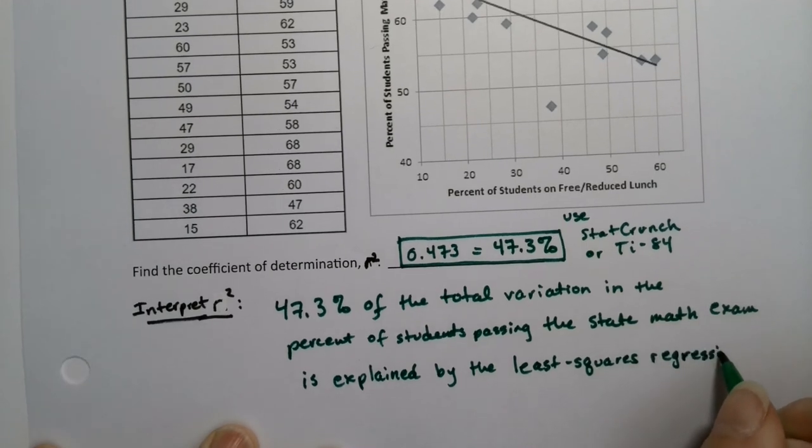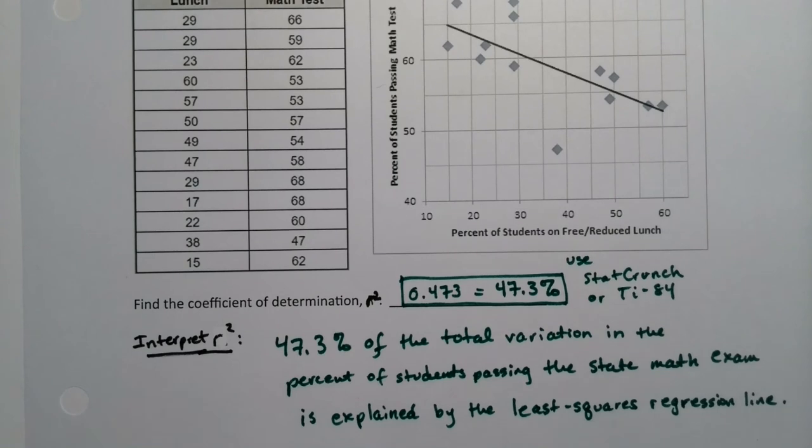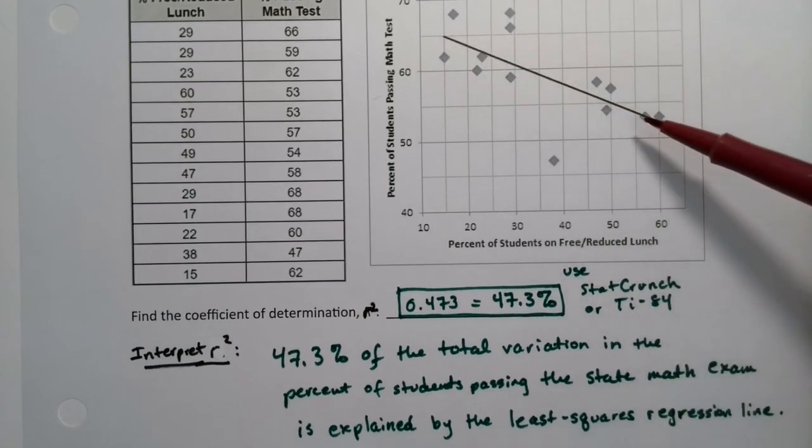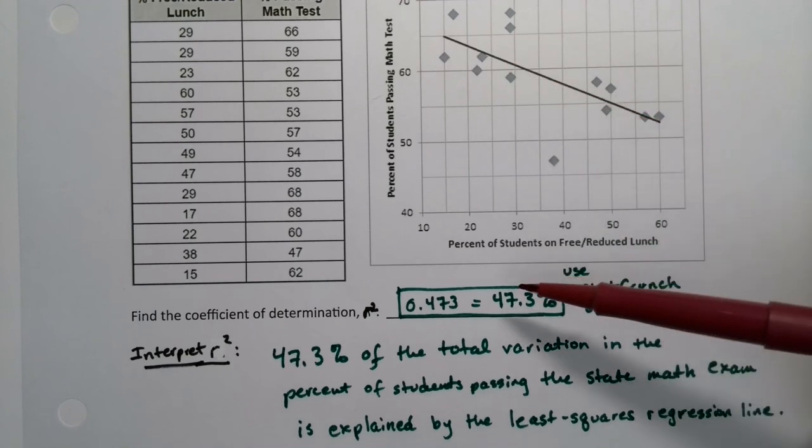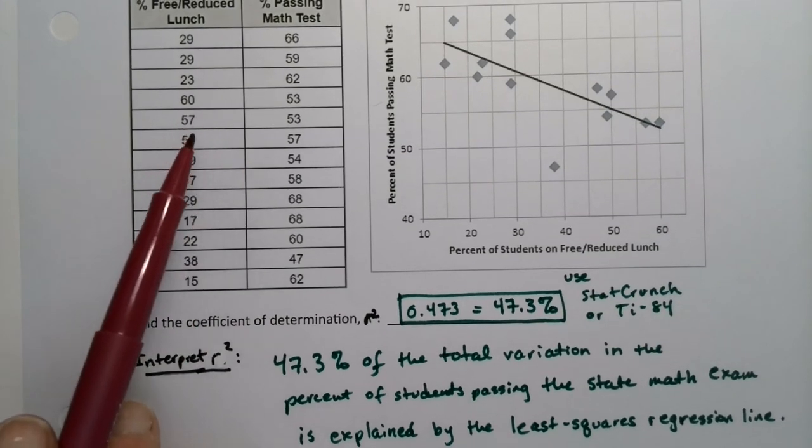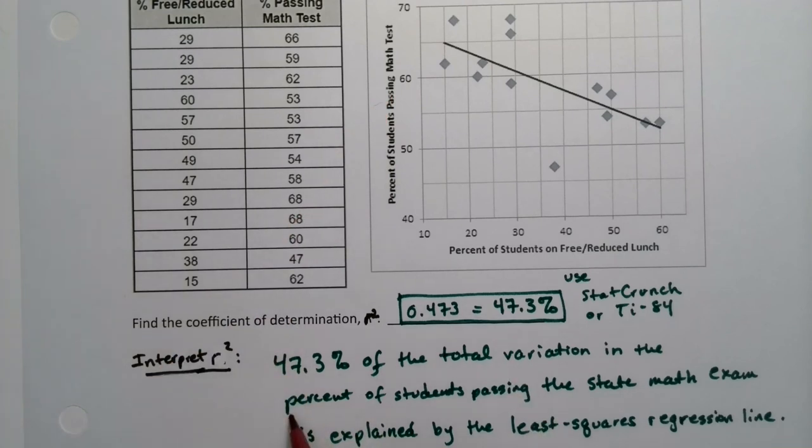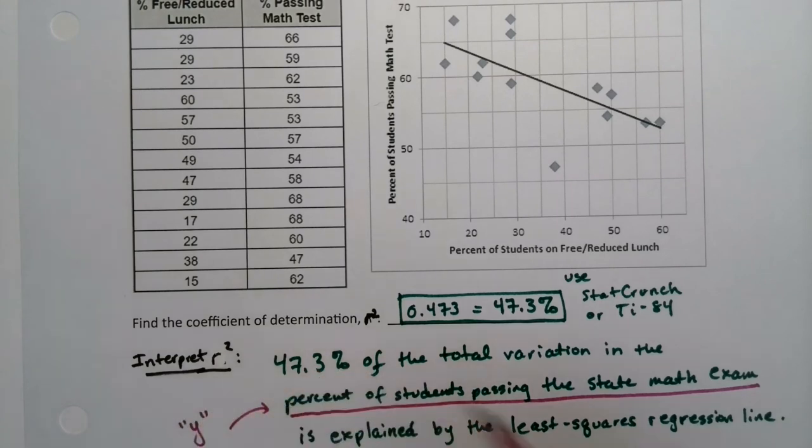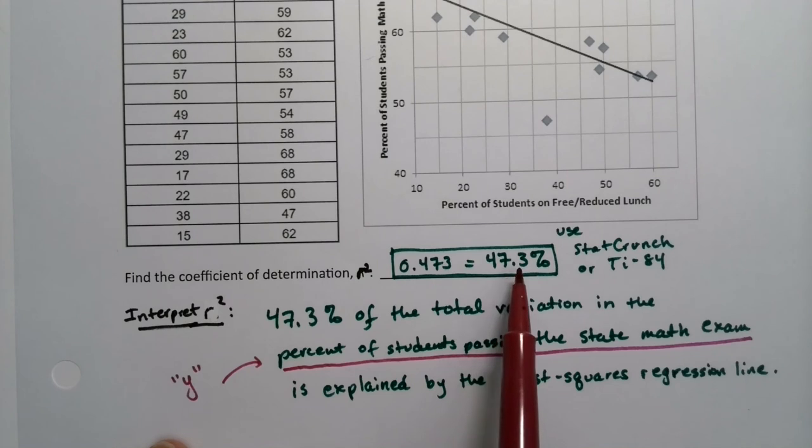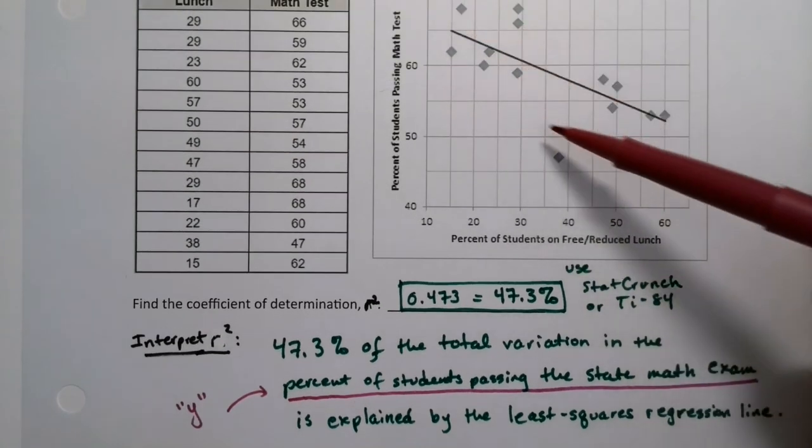What's it talking about? Well, some dots are higher in y value and some dots are lower. And why is that happening? Well, this line can accommodate for 47.3% of why these points are the way they are. But that means that 52.7% of it, we're not sure why it's happening. It's happening for a reason other than this line, other than the free-reduced lunch. There are other factors going into whether students can pass the state math exam.